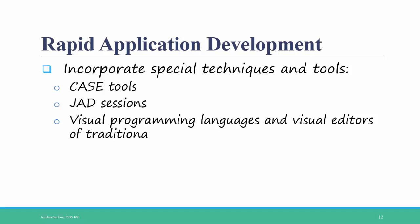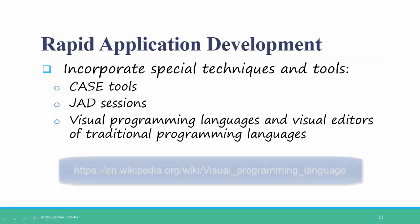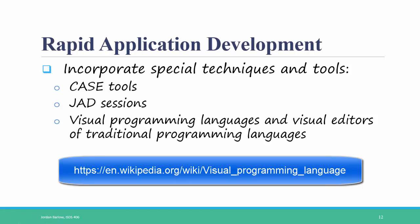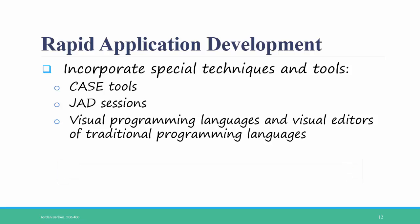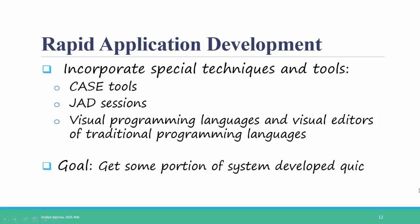Another tool that has helped with rapid application development is visual programming languages and visual editors of traditional programming languages. These are tools that allow you to program visually, which brings the design and implementation phases closer together. If you are interested in learning more about visual programming languages, I recommend the Wikipedia page titled Visual Programming Language. Visual editors of traditional programming languages are software packages like Microsoft Visual Studio, or the open source NetBeans or Eclipse. All of these things help developers to get some portion of the system developed more quickly and in the user's hands.